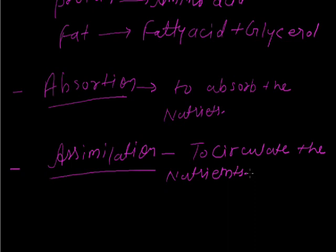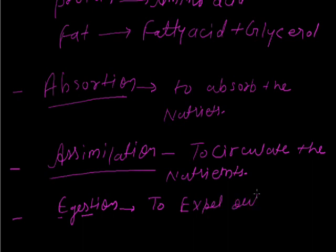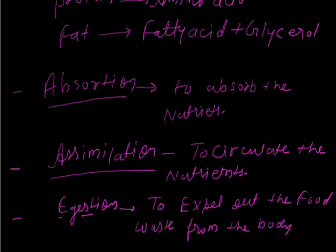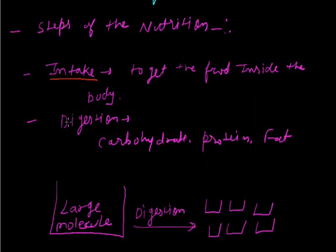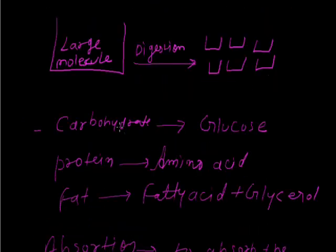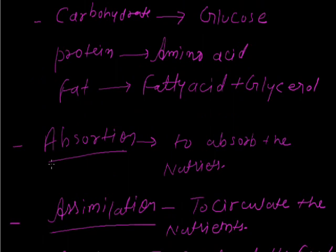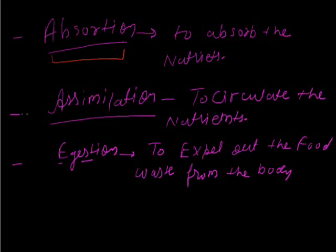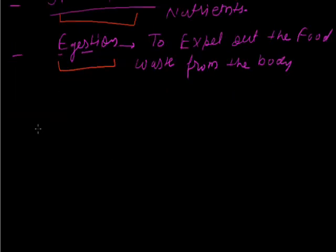After assimilation, the circulated nutrients are used by the body. The remaining food waste is then released from the body, and this process is known as elimination — the process to expel food waste from the body. So the five major steps of nutrition are: intake, digestion, absorption, assimilation, and elimination.